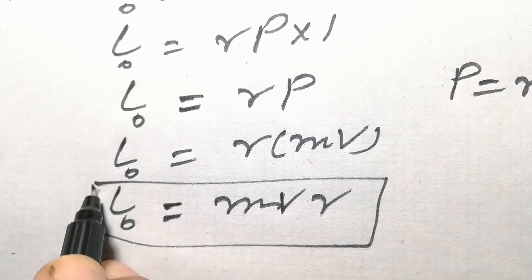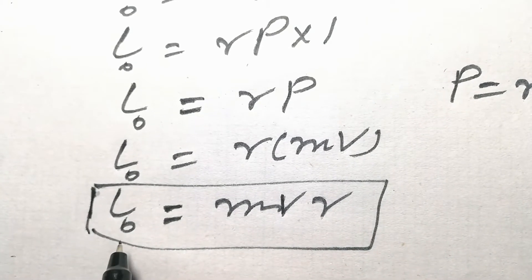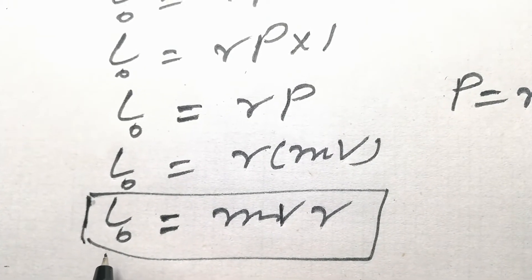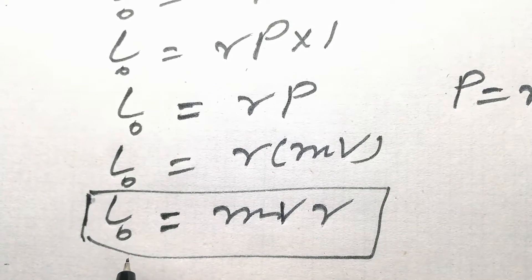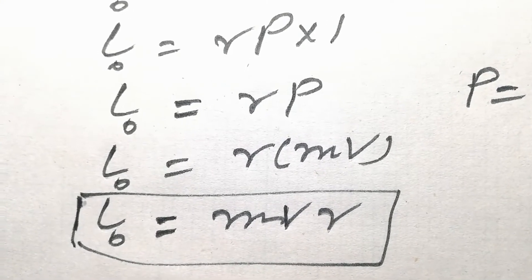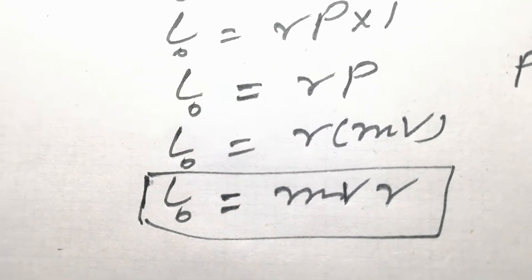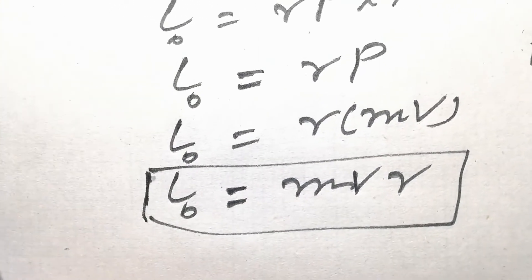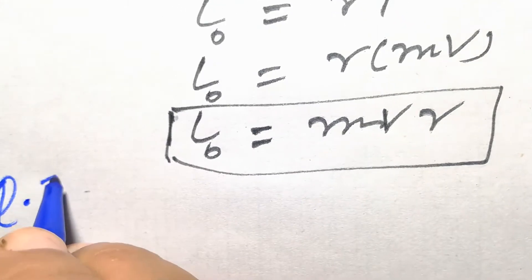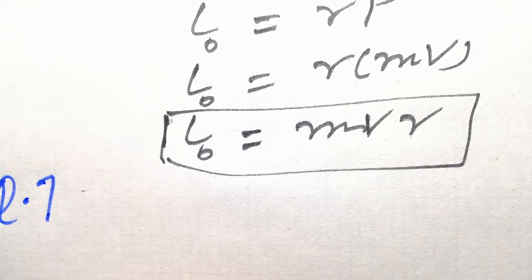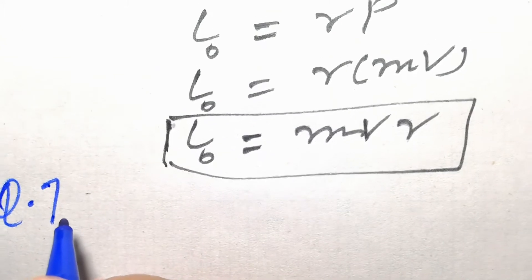So here we have proven that the orbital angular momentum is equal to MVR. Now students, we have another question — question number 7. According to the short smart syllabus, question number 7 is: state the direction of the following vectors in simple situations.